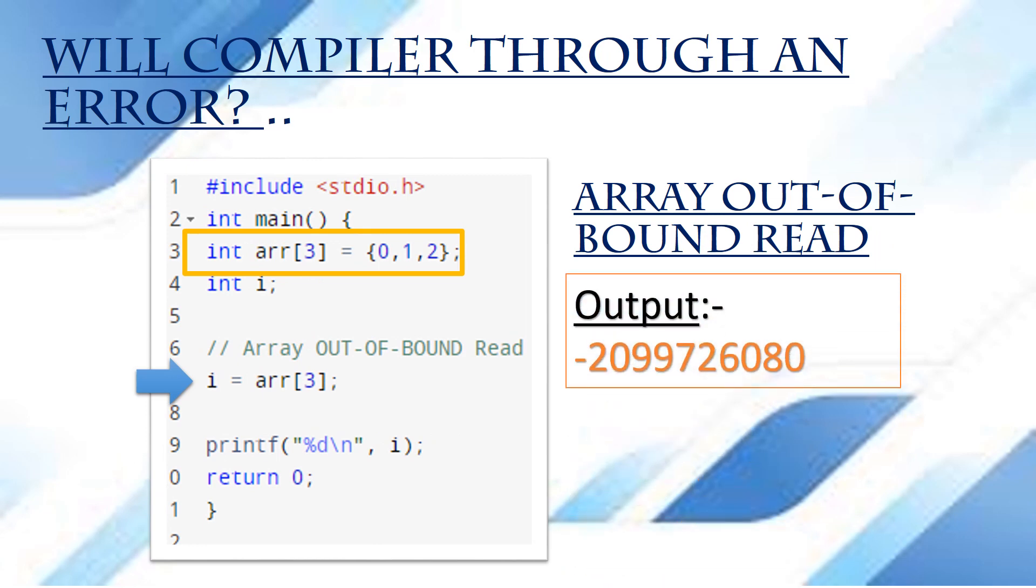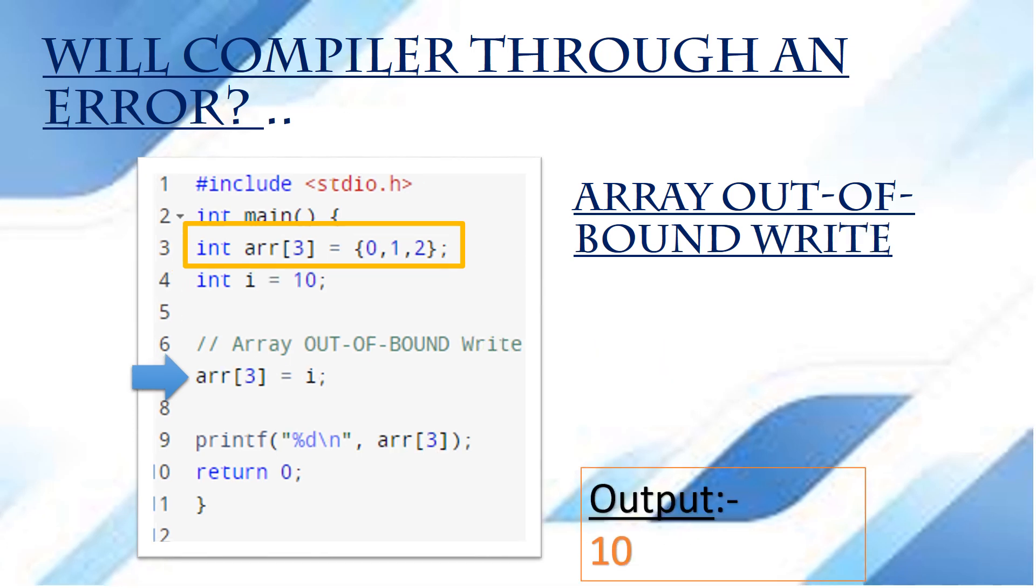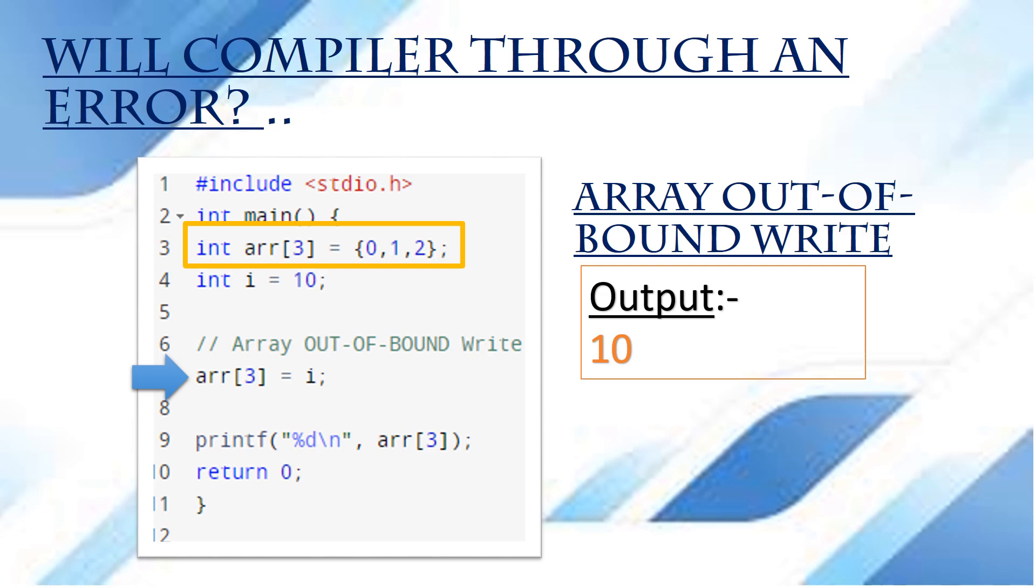In the read case, it will allow to read the junk value and copy it to the variable i. And in the write case, it will copy the value of variable i to the out of bound index.